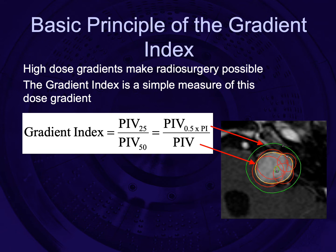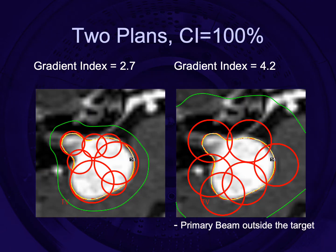The gradient index is simply the ratio of the volume of half the prescription isodose divided by the prescription isodose volume. If the dose fall-off is very steep, the volume of half the prescription isodose will be very small and so the gradient index will be small. A high gradient index suggests poor dose fall-off, while a low index suggests steep dose fall-off. A gradient index of less than three is achievable with Gamma Knife plans for single targets. A gradient index greater than three, while it might have some merit in treatments of diffuse disease, suggests that shots have been placed outside the boundary of the target — as shown in these two treatment plans: isocenters placed inside the target give a relatively low gradient index, while isocenters placed on the edge give a poorer index.